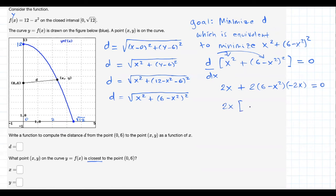Now, solve this any way you want. I'm going to use this factorization here. 2x times what? This is going to be 1 minus 12 plus 2x squared, right? Just algebra.